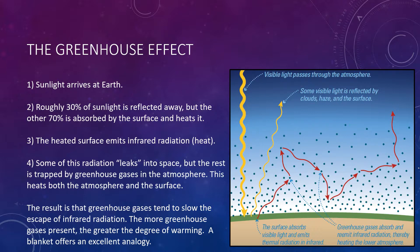Same with the atmosphere — the more greenhouse gases you add, the more blankets you're adding, and so the more heat that we trap. The warming caused by the greenhouse effect gives our planet the moderate temperatures needed for the existence of life today.